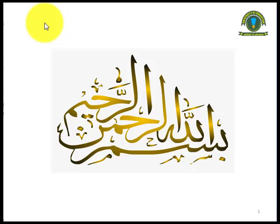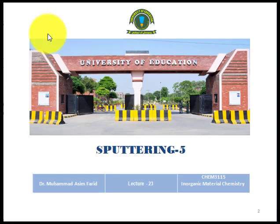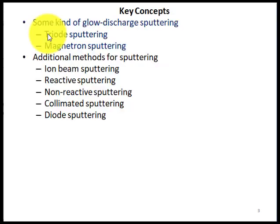Bismillahir Rahmanir Raheem. Dear students, this is Inorganic Material Chemistry Chem 3.1.1.5, and this is the 5th lecture on sputtering. This is lecture number 23 of this course. The key concepts include triode sputtering, magnetron sputtering, and ion beam sputtering.